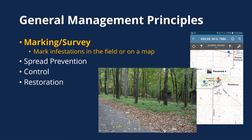I like to carry a roll of flagging or some pin flags when I'm walking around. If I find a little stand of garlic mustard or some invasive species, I put a flag right there so I can find it easier again. There are also a lot of apps that'll help you mark things on your land — Onyx, Avenza, EDDMapS, which is specific to invasive species, or even Google Maps. Just another way of tracking things on your land that helps you follow up and plan your management.